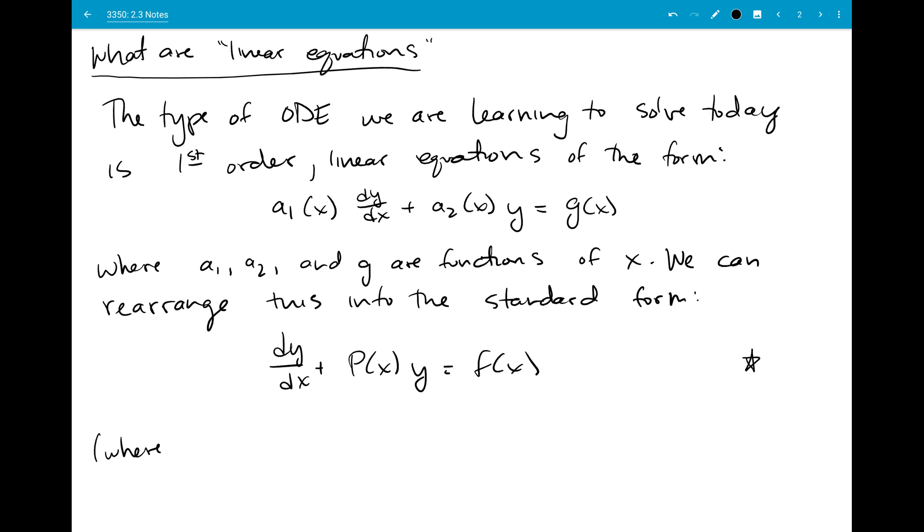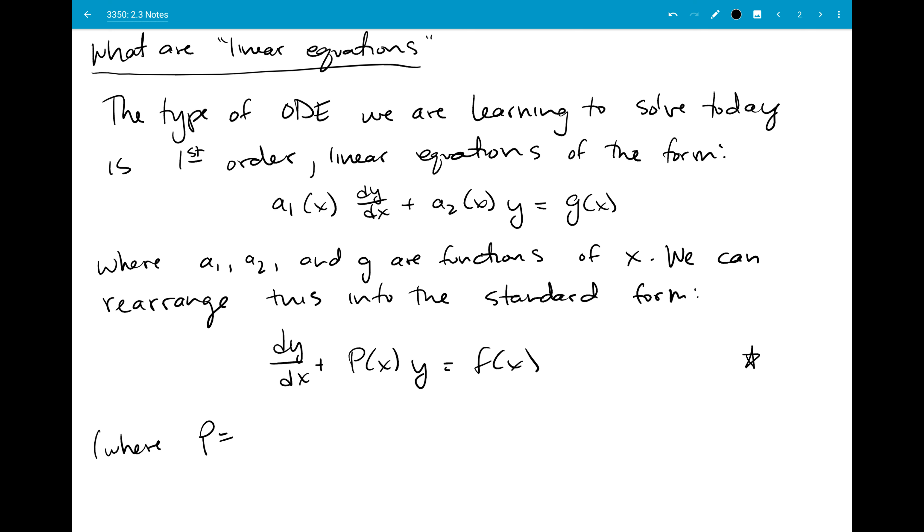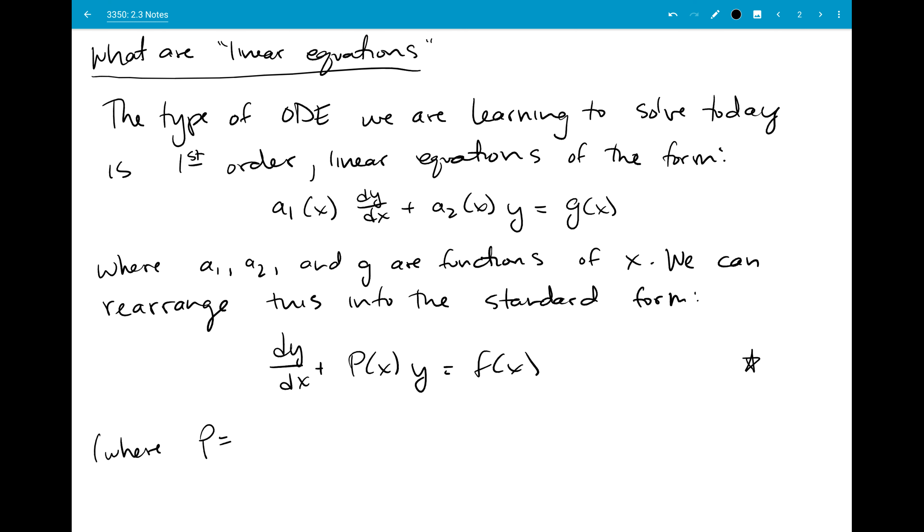Just to be clear, all that happened between those two lines is you divided by a1. So p is just whatever you had for a2 over a1, and f is just whatever you had for g over a1. And so this form is the one we use when solving these linear ODEs.